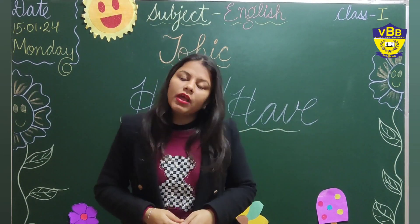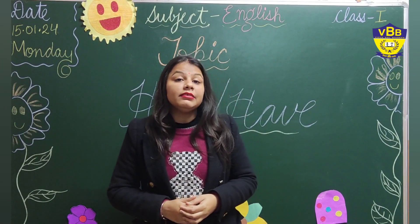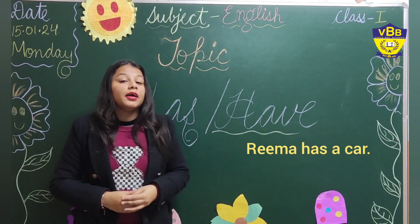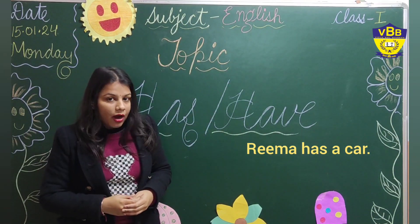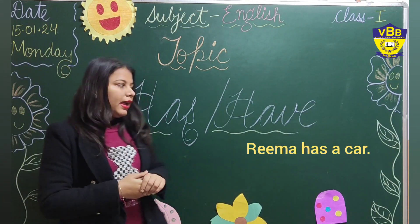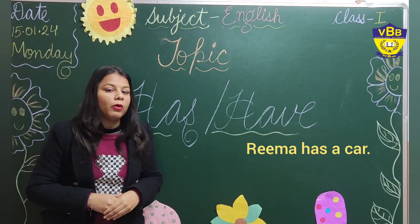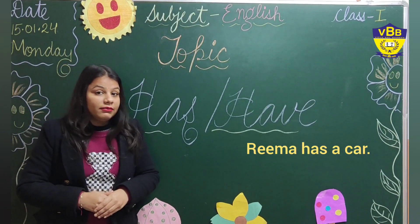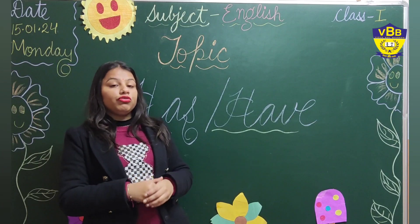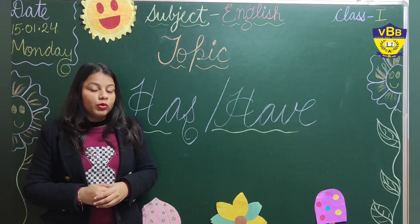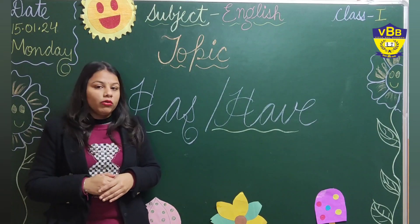Let's take some examples to make the concept more clear. My first example is: Rima has a car. Here we are talking about Rima, and Rima is one girl. We are talking about only one person — Rima. She has a car. It means the car belongs to Rima. So that is why we have used 'has' — the word has shows that the car belongs to Rima.